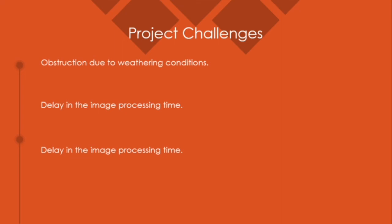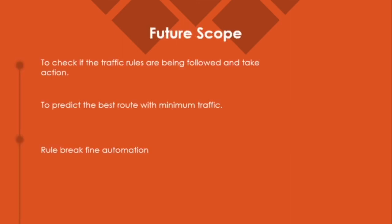Now let's talk about the project challenges we faced. One major challenge is obstruction to the camera due to weather conditions. To overcome this we can provide multiple camera sensors so that if one camera is unable to detect traffic, another can be used. Another major issue is the delay in image processing time. This is a basic system that we have proposed, and in the future many features can be added — such as checking if drivers are actually following traffic rules and whether vehicles are travelling within the speed limit.